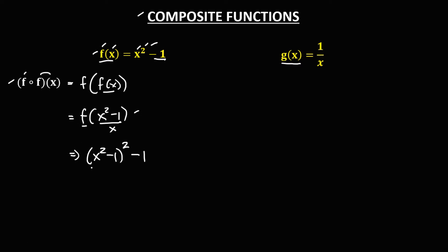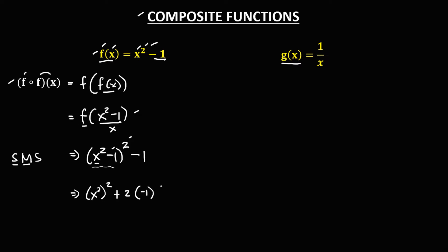To expand the square of a binomial, we use the SMS method: S — the square of the first term, so the square of x squared. Then M — multiplication, so we have 2 times negative 1 times x squared. Then S — the square of the second term, so 1 squared.